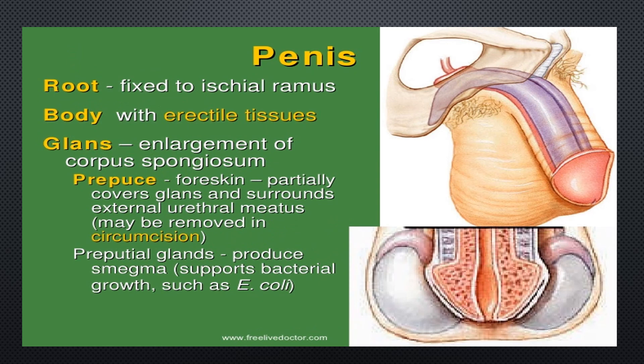The root of the penis is fixed to the ischial ramus. The body consists of erectile tissues — the entire penile body is made of erectile tissue. The glans is an enlargement of the corpus spongiosum at the tip of the penis. The prepuce is called the foreskin and is removed during circumcision. The preputial glands produce smegma, which supports bacterial growth such as E. coli.